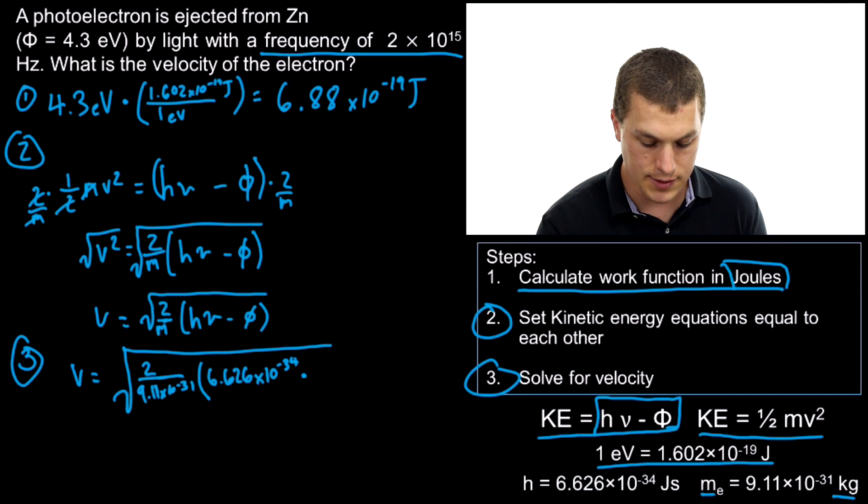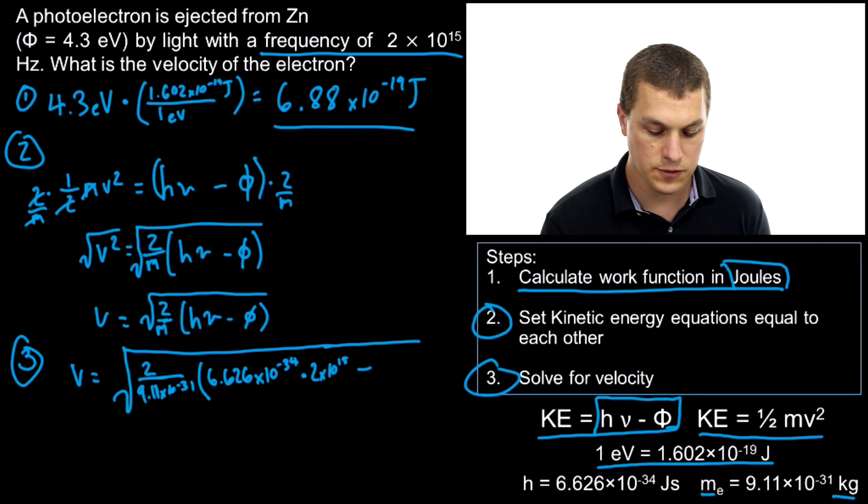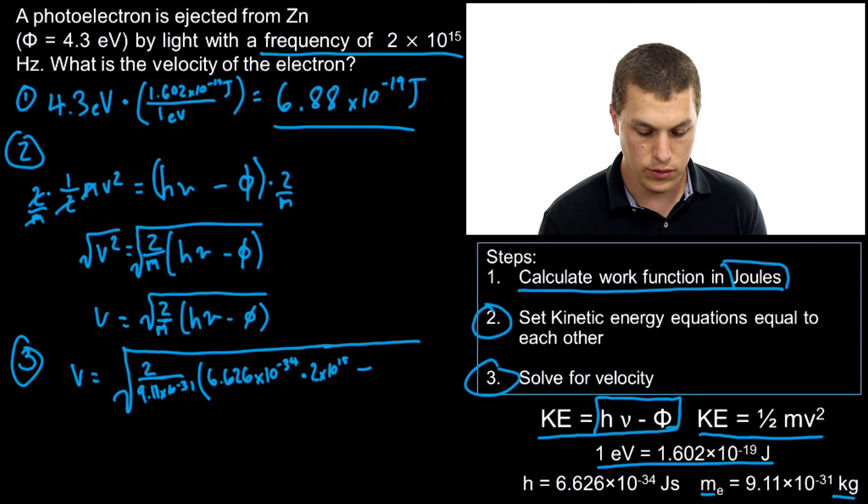We multiply Planck's constant by 2×10¹⁵ Hz. Lastly, we subtract out our Φ, which we solved for right here: 6.88×10⁻¹⁹ J.